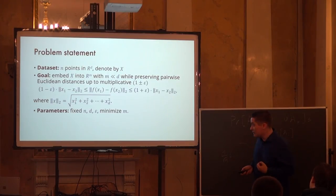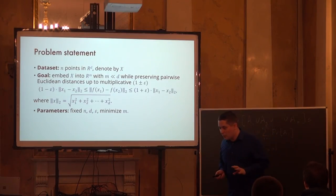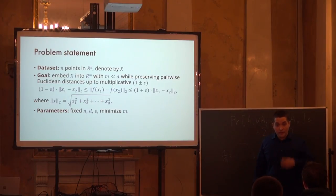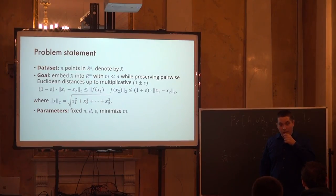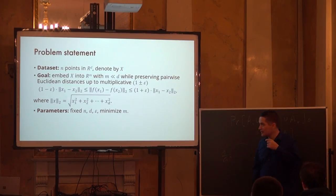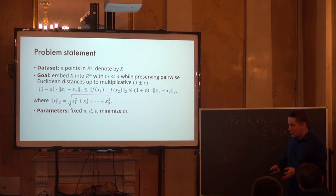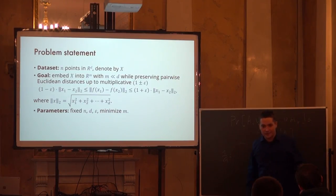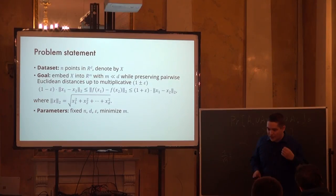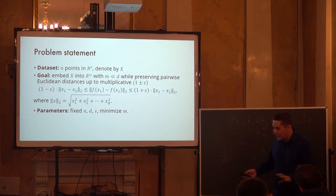There are two types of guarantees: worst-case (for any dataset, you can achieve this many dimensions with this accuracy) and data-dependent (if your data is nice enough, you can do better). I'll focus on worst-case bounds. A naive bound: you can always reduce dimension to N minus 1, where N is the number of points. So 10 points in a million-dimensional space can be reduced to 9 dimensions without changing distances at all. This bound is completely independent of the original dimension D.